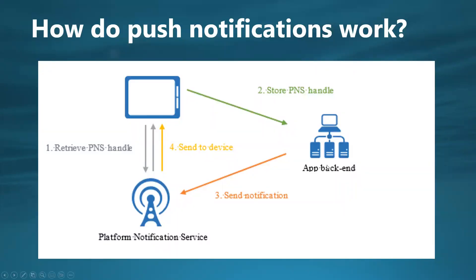Here is a high-level view of how push notifications work. An application that wants to receive a notification contacts the Platform Notification Service (PNS) for the target platform on which the app is running and requests a unique, temporary push handle. The handle type depends on the system — for example, WNS uses URIs while APNs uses tokens. I will also show you how these tokens and certificates work when we go to the Azure portal.